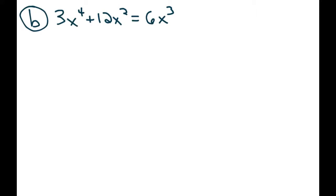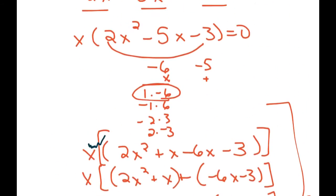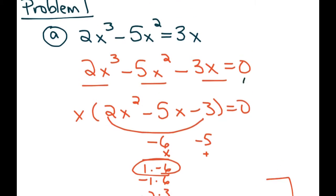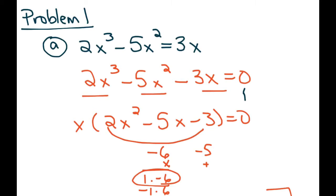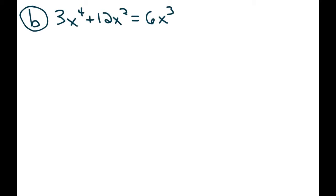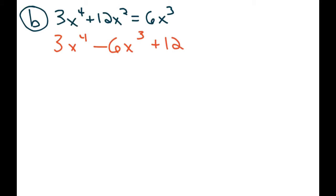Not all polynomials have all real solutions. In the previous problem, because the biggest exponent was 3, the most amount of times that the graph could hit the x-axis was three times, or at most three real solutions. But we learned when we talked about quadratic equations that sometimes we can get something called imaginary solutions. The only way to determine imaginary solutions is by using the quadratic formula. So first, I am going to set this equation equal to zero, and I'm going to write it in descending order of power — so I should actually write 3x to the fourth minus 6x cubed plus 12x squared equals zero.